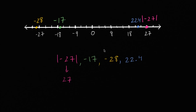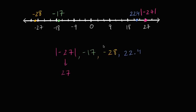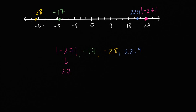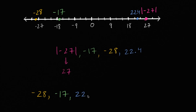So if we want to sort it from least to greatest, we just have to start at the left end of the number line. The smallest, or the least of them, is negative 28. Then we go to negative 17. Then we go to 22.4. And then we go to the absolute value of negative 27. And we are done.